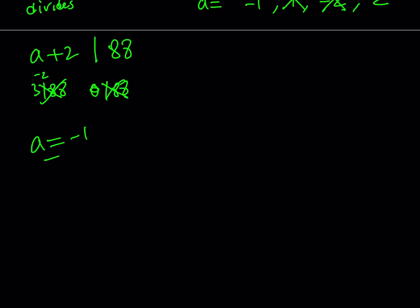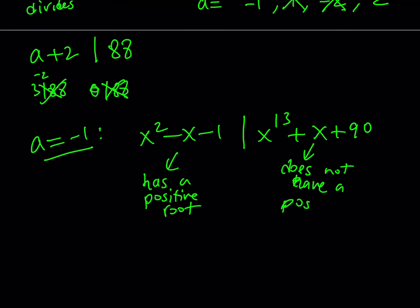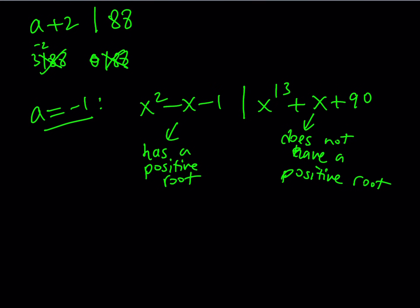If a equals negative 1, we're asking whether x squared minus x minus 1 divides x to the power 13 plus x plus 90. We can check using long division, but that is very long. Instead, note that x squared minus x minus 1 has a positive root by Vieta's formulas, but x to the 13 plus x plus 90 has all positive coefficients so it cannot have a positive root. Therefore they can't share a common root, and so a equals negative 1 is not valid.